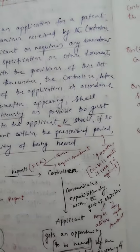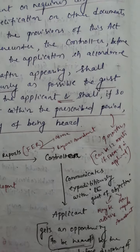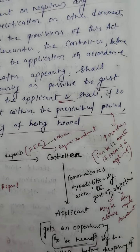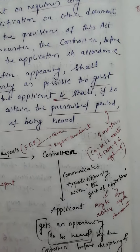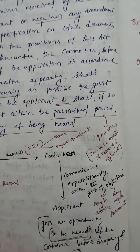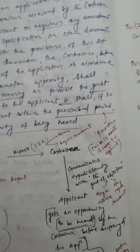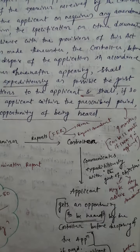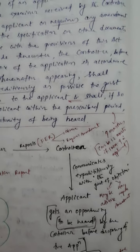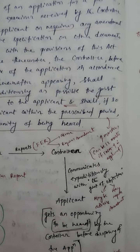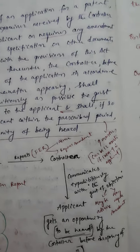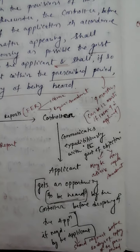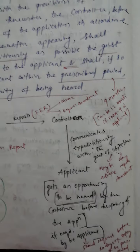By receiving this report, the controller communicates expeditiously the gist of objections — which may be adverse or may require some amendments — and the controller communicates all these things to the applicant. Before disposing of the application, the controller gives an opportunity to the applicant to be heard, and this is done by the request of the applicant before 10 days of expiry of the prescribed period.